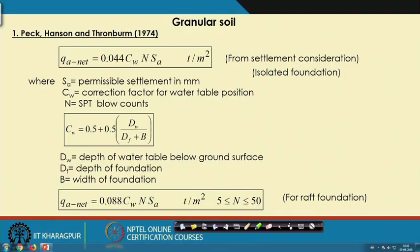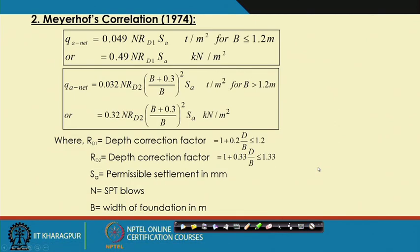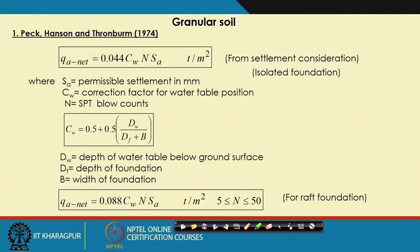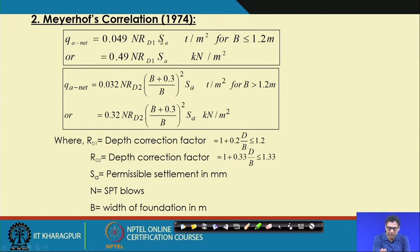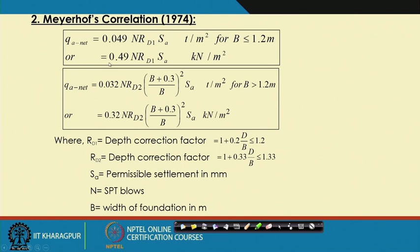The previous corrections were given by Peck, Hanson, and Thorban in 1974. The next correlation is given by Meyerhof 1974. For isolated foundation, the expression is 0.049 × N × RD × Sa, and these are all empirical correlations based on observations. If the width B of the foundation is less than 1.2 meter, one expression applies; if greater than 1.2 meter, another expression applies.